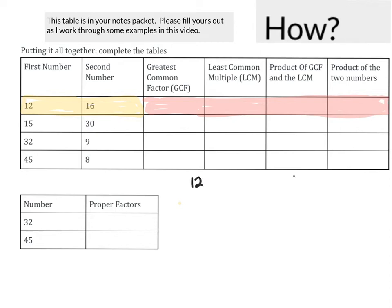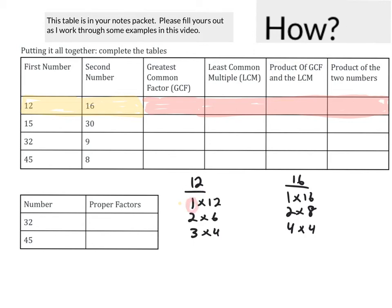Let's find the factors of 12 and 16. I like to write them as pairs. Factors of 12: 1×12, 2×6, 3×4. Factors of 16: 1×16, 2×8, 4×4. The common factors they both share are 1, 2, and 4. The greatest common factor is 4.